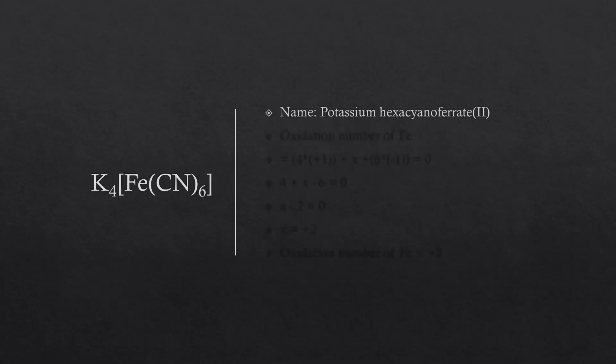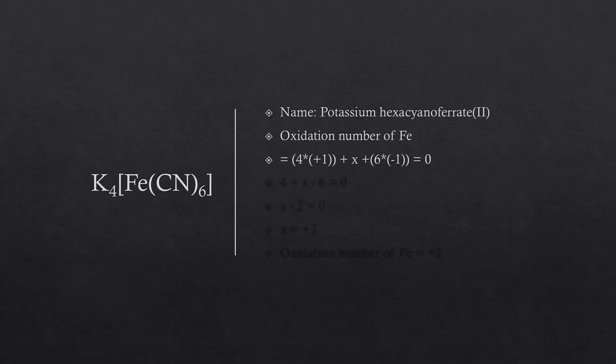The formula is K4Fe(CN)6. As we already know, the first part is potassium, which is positive. The complex part is negative. Therefore, we have to name that second. Before naming it, we have to determine the oxidation number of Fe. There are 4 potassium atoms, and the oxidation number of potassium is plus 1.